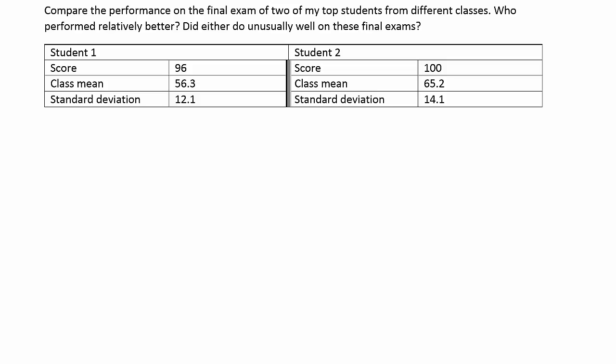All right, so we have two sets of data here. We have student one, student two. The score for student one was 96 on the final exam. The class that he was in had an average of 56.3, the standard deviation 12.1. For student two, she scored a perfect score, 100% on her final. The class mean for that class was 65.2%, and the standard deviation for her group was 14.1.